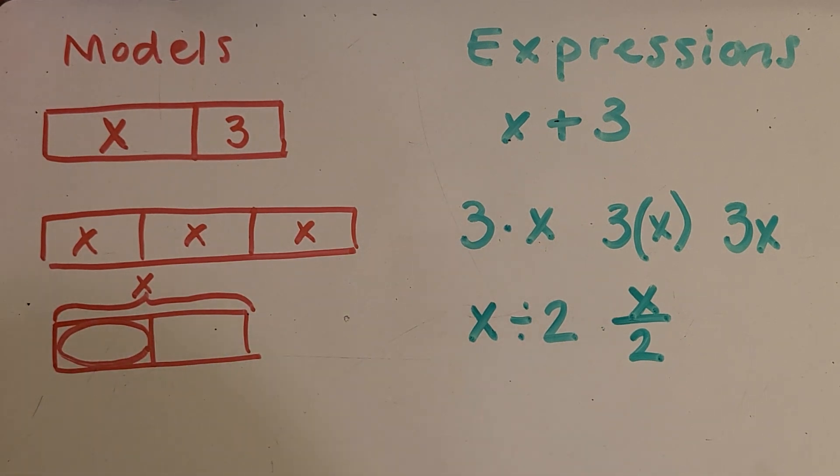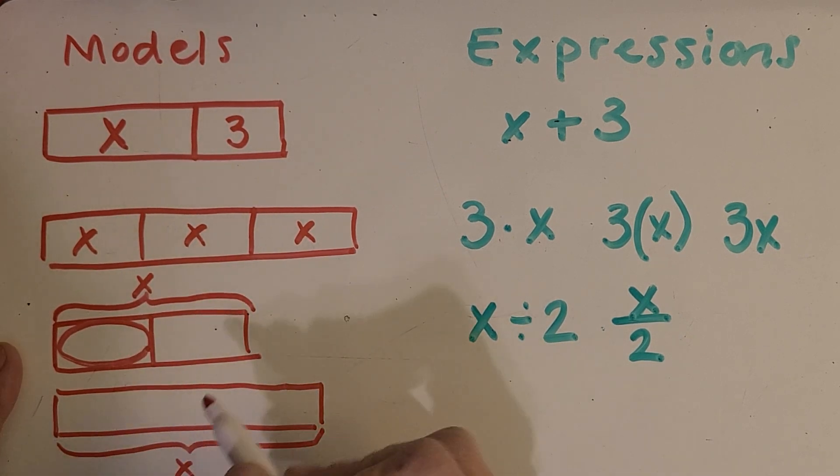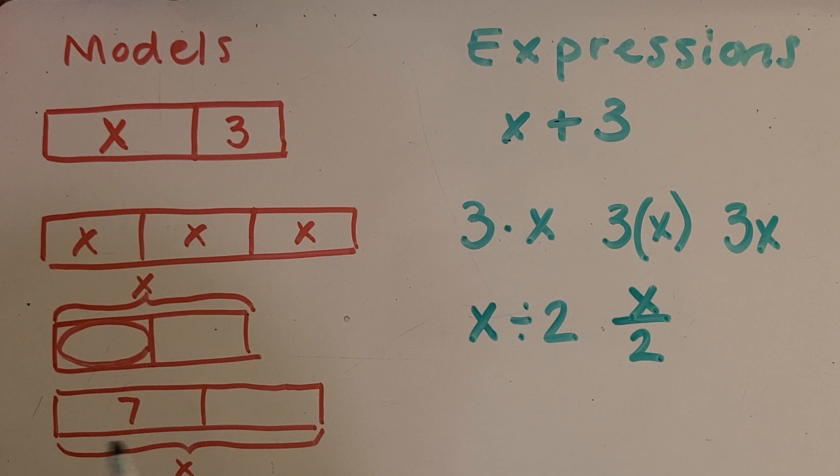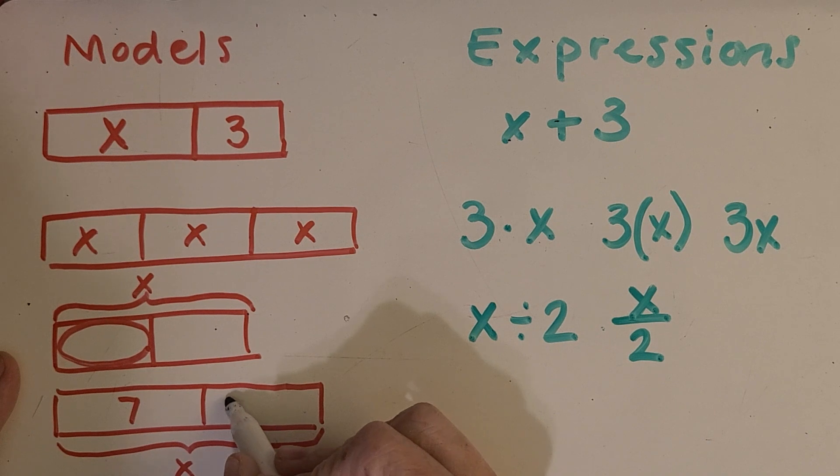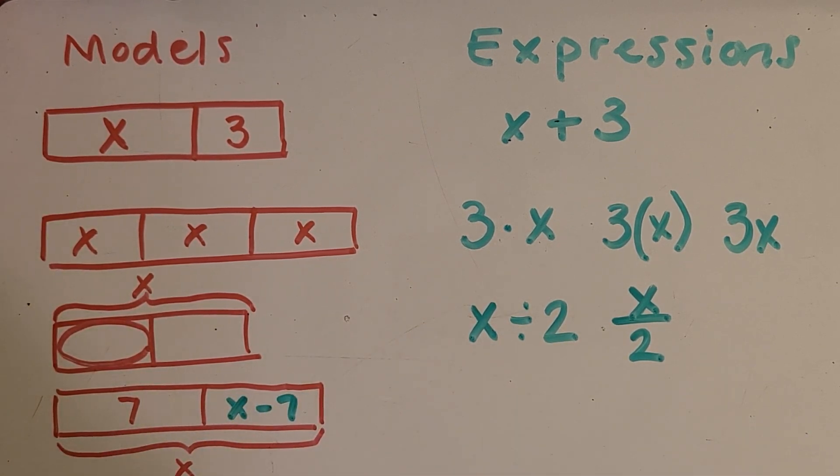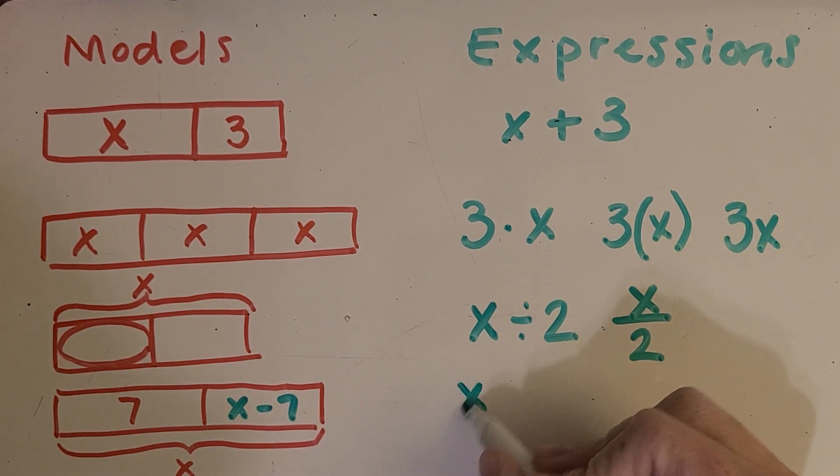So I've got one model left for you. And you could probably guess what operation it is. This one, I'm going to show X here, and then a seven there. And what you think is going on in this model. It reminds me of a part-part-whole diagram that you're familiar with from back in younger elementary. And so, if we know the total and we know this part, if you subtract, right, the total minus that part, you'll get this other part. So, this is X minus seven.